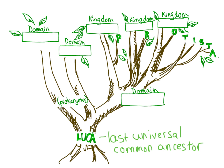Each taxon evolved on a different branch on the tree of life from that common ancestor. The three major branches are the domains. So we'll start with the two prokaryotic domains, Bacteria and Archaea. And then we have the eukaryotic domain, Eukarya, and within that domain, many different kingdoms.